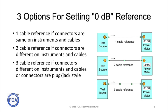A launch reference cable attaches to the test source and is used to set the 0 dB reference and to connect into the cable plant under test. At the far end, we use a receive reference cable connected to the power meter. We need to set a 0 dB reference, and there are three options for doing that. We can use a one cable reference if the connectors are the same on the instruments and the cable under test — for example, both have standard SC connectors.